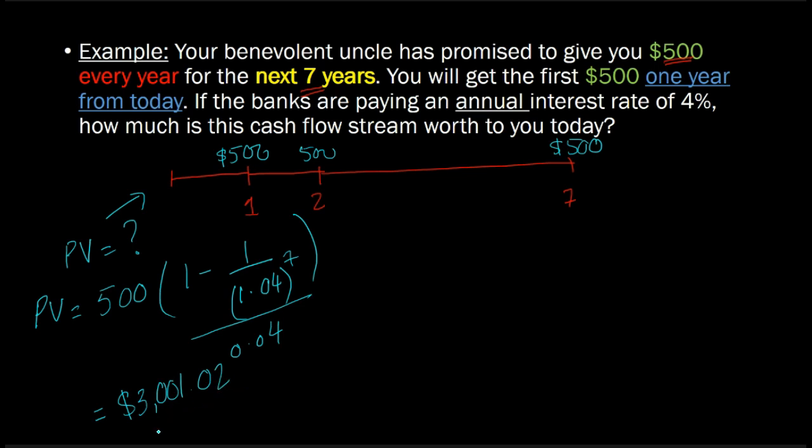So what is the interpretation of this number? You're basically saying to your uncle that you giving me $500 every year for the next seven years is as if you're giving me $3001.02 today.